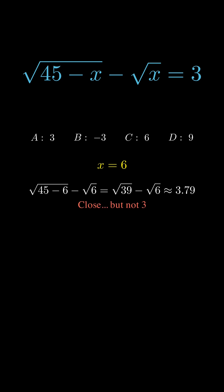Finally, last option. Square root of 36 minus square root of 9, which gives 6 minus 3 equal to 3. Bingo!